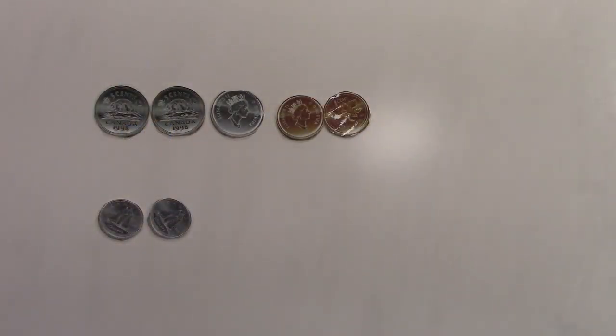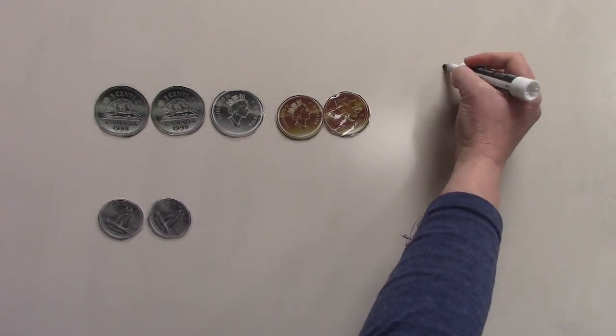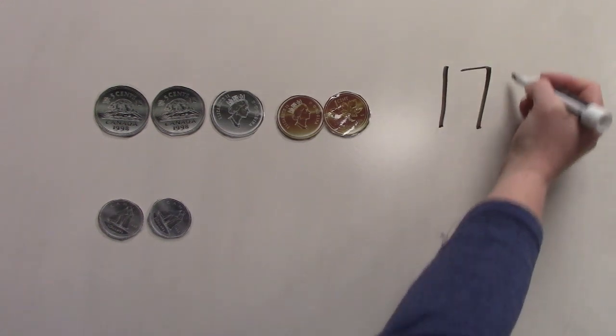Hi class! It's Mrs. Lawson. Today we're going to take a look at some money questions. We're going to be counting money and then we're going to be adding the money together. Let's take a look. We're going to start off by counting our money. We're going to count just this row and then we're going to add it to the money in the bottom row. Let's begin. 5, 10, 15, 16, 17. This is 17 cents.